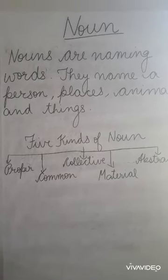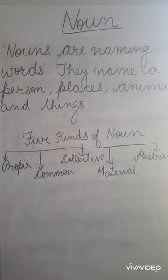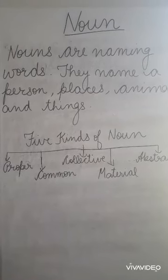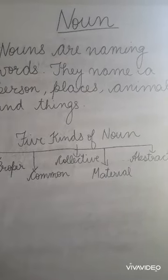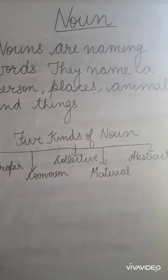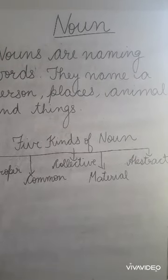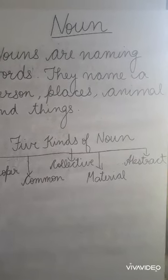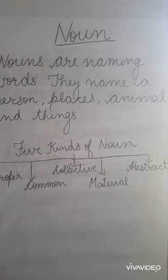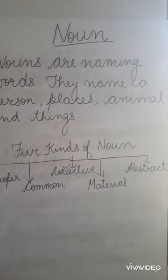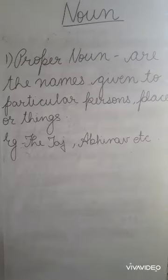There are five kinds of noun: proper noun, common noun, collective noun, material noun, and abstract noun. In this video, you will learn about the kinds of noun and their examples.